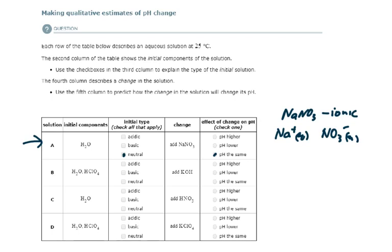Let's look at solution B. Its initial components are water and perchloric acid and so its initial type would be acidic.